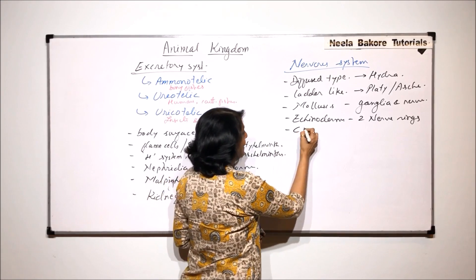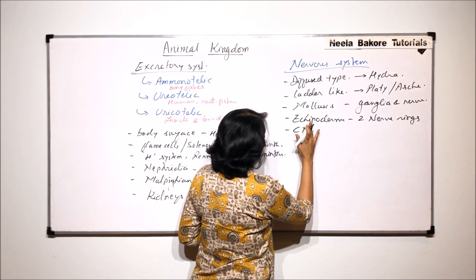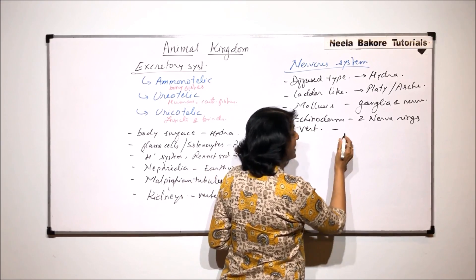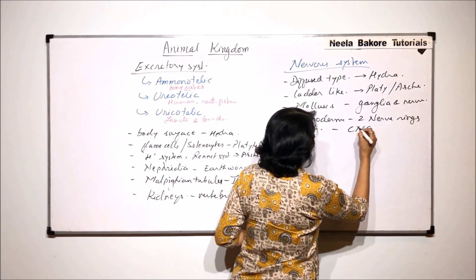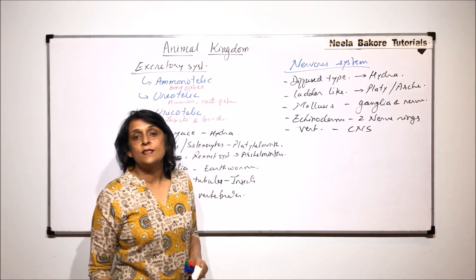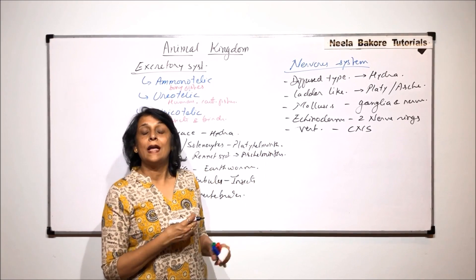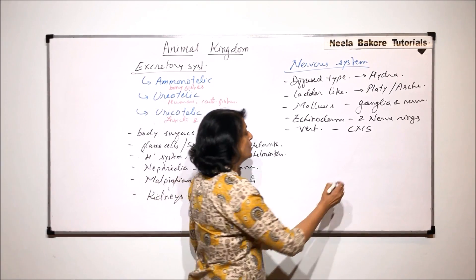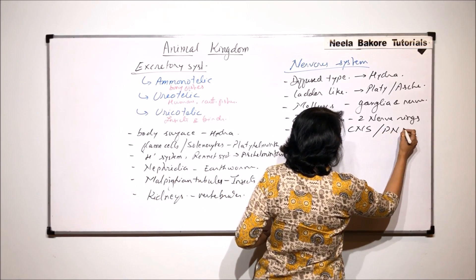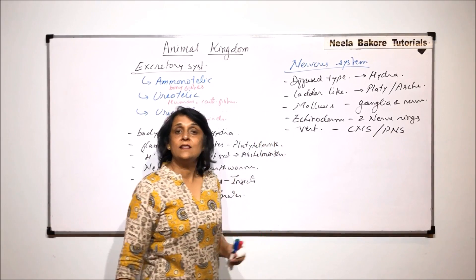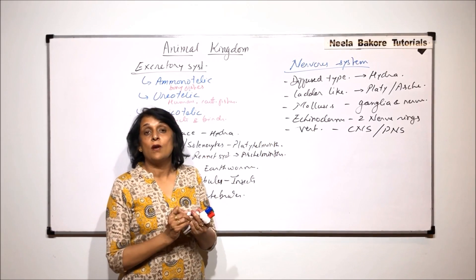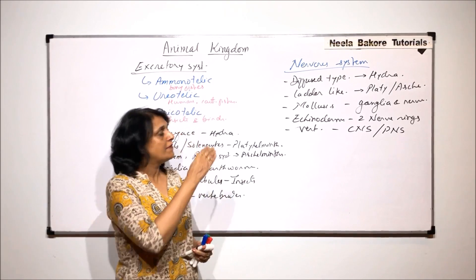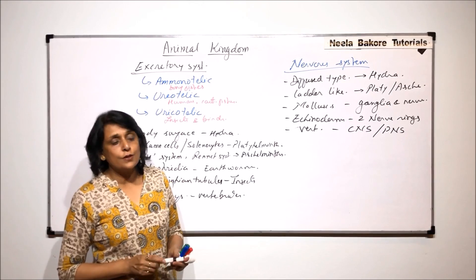Then there is the CNS, found in vertebrates — higher animals. CNS means there is a brain, spinal cord, and the PNS, that is the peripheral nervous system. So higher animals have both CNS and PNS. On this basis too we can group animals according to their type of nervous system.